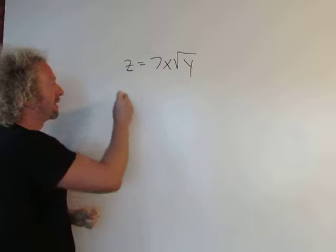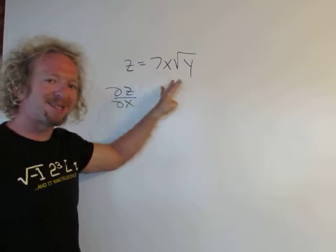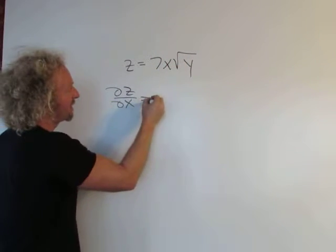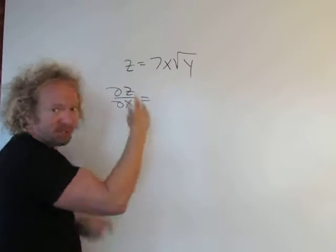So first we're going to compute del z del x. When you do this you basically treat all of the y's as constants. So you want to think of this piece here as a number, right? So it just hangs out. Then you take the derivative of 7x. 7 is a number so it kind of hangs out.